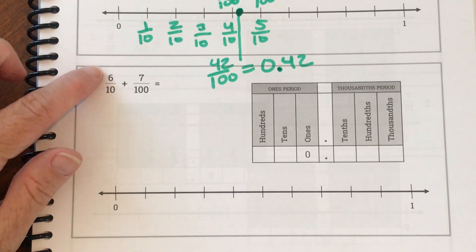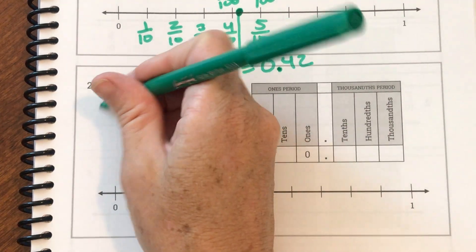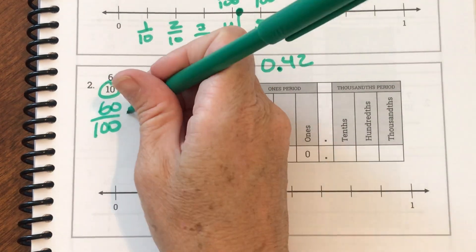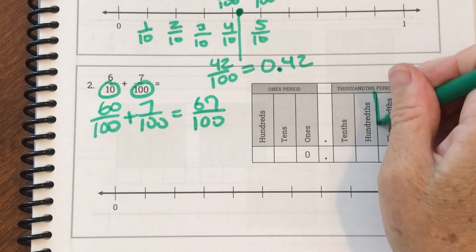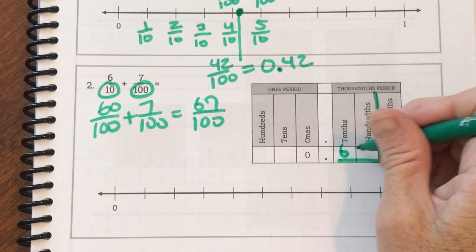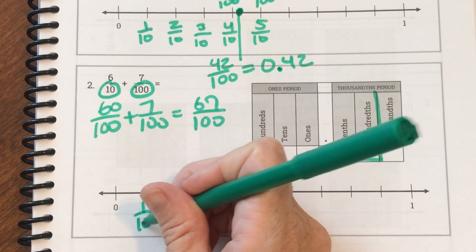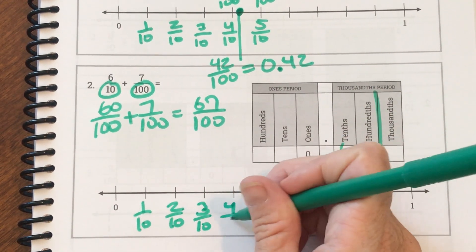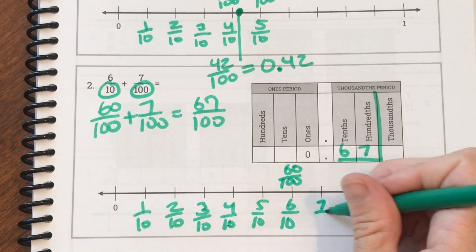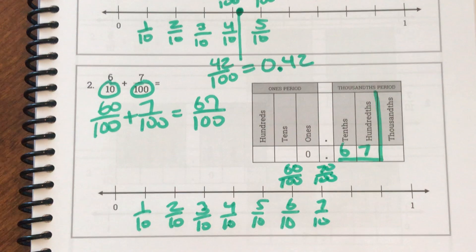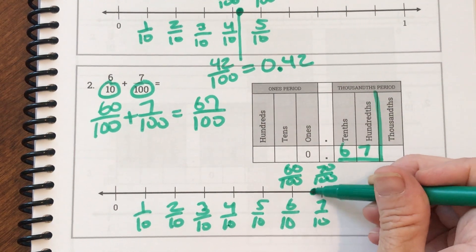Next we have six tenths plus seven one-hundredths. They have different denominators so we can't add them, but we know that six tenths is the same as sixty one-hundredths. Then I can add them and get sixty-seven one-hundredths, which means we stop at the hundredths place — so it's 0.67, sixty-seven hundredths. On the number line, six tenths is the same as sixty one-hundredths, and seven tenths is the same as seventy one-hundredths. So sixty-seven one-hundredths is between sixty and seventy hundredths, closer to seventy — maybe about there.